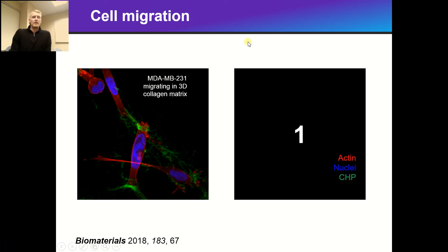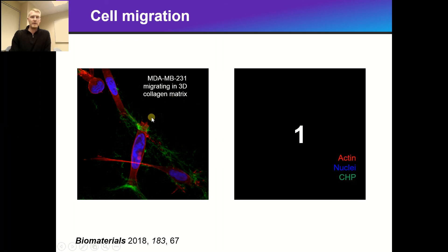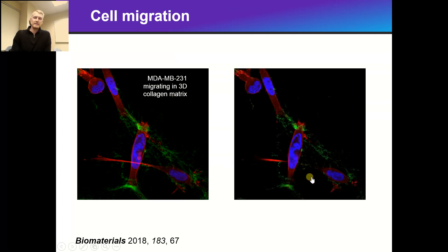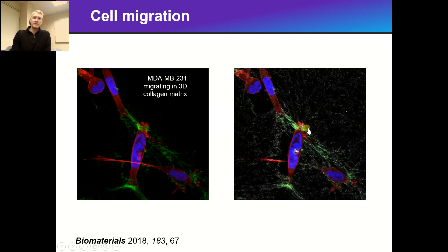One other example where CHPs can be helpful is in cell migration. We did a 3D cell experiment where we had MDA-MB231 breast cancer cells migrating in a 3D collagen matrix, and we stained it with our fluorescently labeled CHP. On the polarizing edges of the cell when it's moving through the matrix, it actually causes higher amounts of collagen remodeling. Actin is stained red, CHP is green, and the nuclei in blue. On the polarizing edges, you see higher CHP intensity, and this second image shows the SHG signal as well.